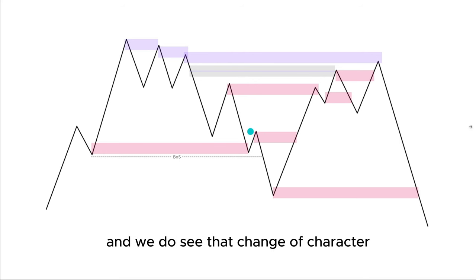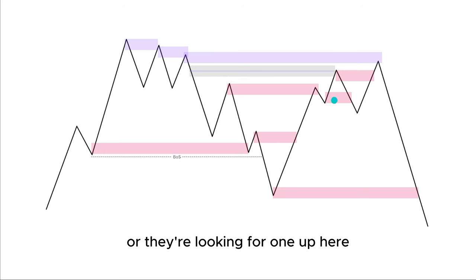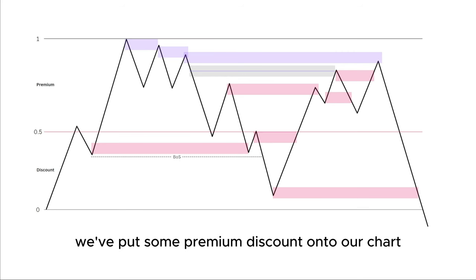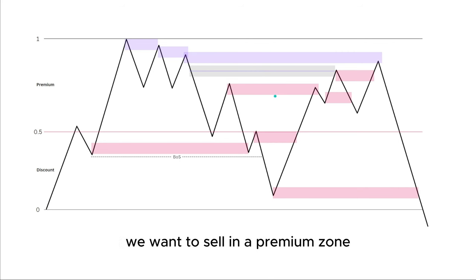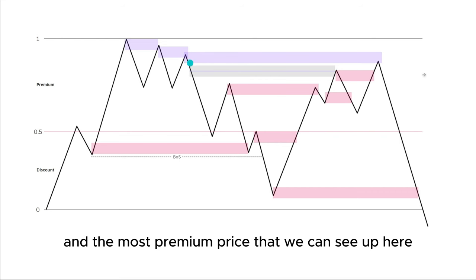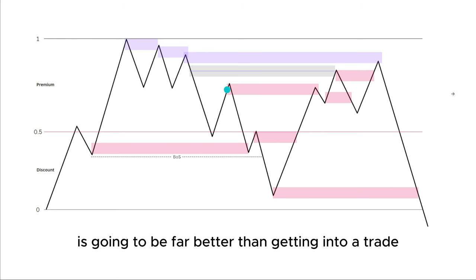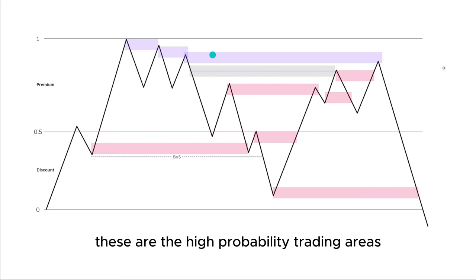When we do see that change of character, most traders are looking for a POI down here or up here, failing to notice what the entire narrative really is. We can then put premium and discount levels on our chart — everything below the 0.5 level is a discounted zone, everything above is a premium zone. If we are looking to sell, we want to sell in a premium zone, and the most premium price up here is going to be this area. Logically, if large institutions are trying to get in at the best price, this area is far better than trading from a lower point. If we have unmitigated orders in a more extreme area of our premium or discount zones, these are the high probability trading areas.